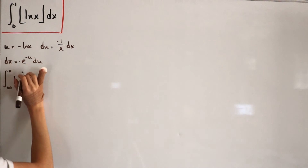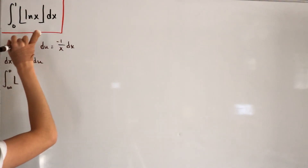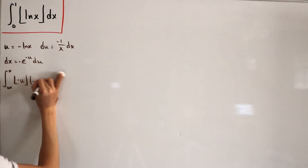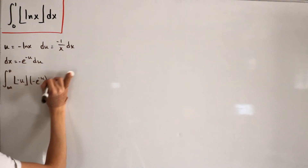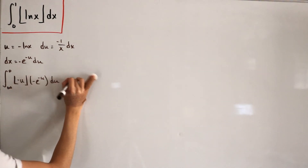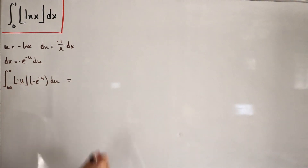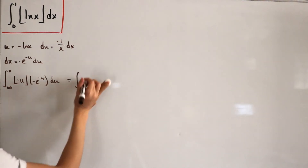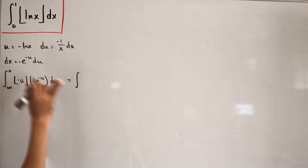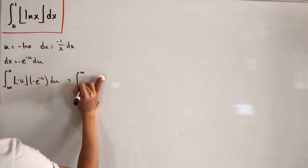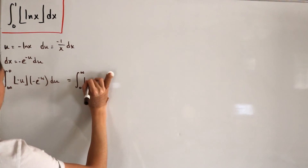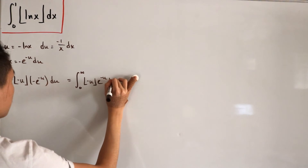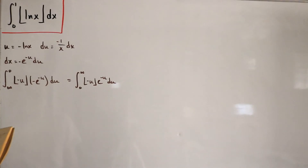Plugging everything back in: the floor of ln(x) becomes floor(-u), and we multiply by -e^(-u) du. We now have infinity on the lower bound and zero on the upper bound, so we flip the integral, which introduces a negative sign. But we already have a negative from the substitution, so the two negatives cancel and everything becomes positive. We're left with the integral from 0 to ∞ of floor(-u) · e^(-u) du.